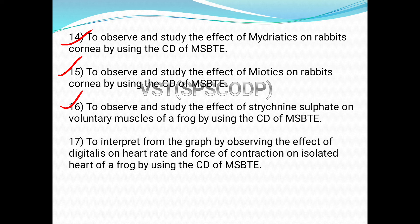The next experiment is to interpret from the graph by observing the effect of digitalis on heart rate and force of contraction on the isolated heart of a frog using the CD of MSBT. In this experiment, we study concepts such as cardiotonic and congestive heart failure, and understand the mechanism of action of digitalis and interpretation from the graph and observation.